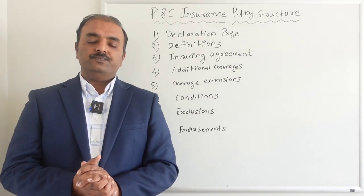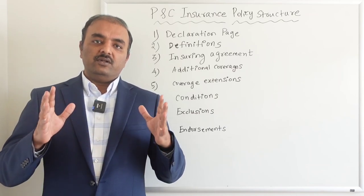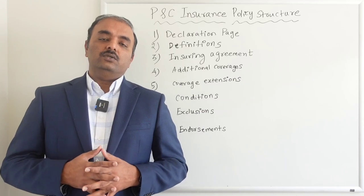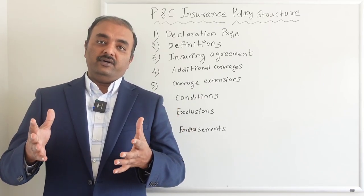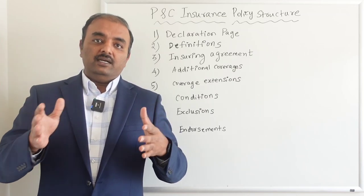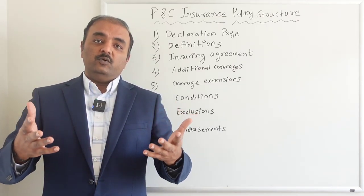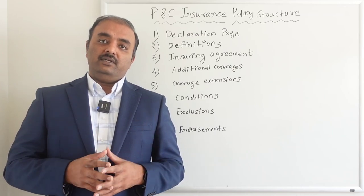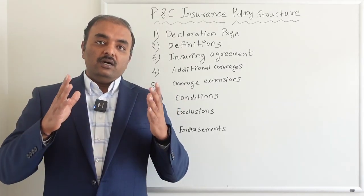On top of that, we have additional coverages, which are complementary coverages. By default, the insurance company covers your building, personal property, or loss of use, and on top of that they give some additional coverages free of cost. One good example is preservation of property coverage — if there is a loss and you need to safeguard property in a temporary location, the insurance company takes care of that period until your building is recovered. Similarly, debris removal coverage is provided if you need to clean up pollutants across your home or property. There is a specific limit set for each of these additional coverages, such as ten thousand or fifteen thousand dollars.